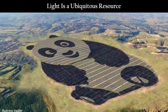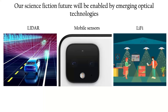In addition to collecting energy and turning it into electricity, our science fiction future is going to be enabled by emerging optical technologies that control and utilize light. This is most obviously seen in a few technologies: first, LiDAR, which uses light waves to detect nearby objects and is seen here in Mountain View, California in the form of self-driving cars. There are also optical mobile sensors responsible for technologies such as facial recognition for opening your phone, and using infrared light sources placed on the skin to detect iron levels in the blood without any invasive technologies.